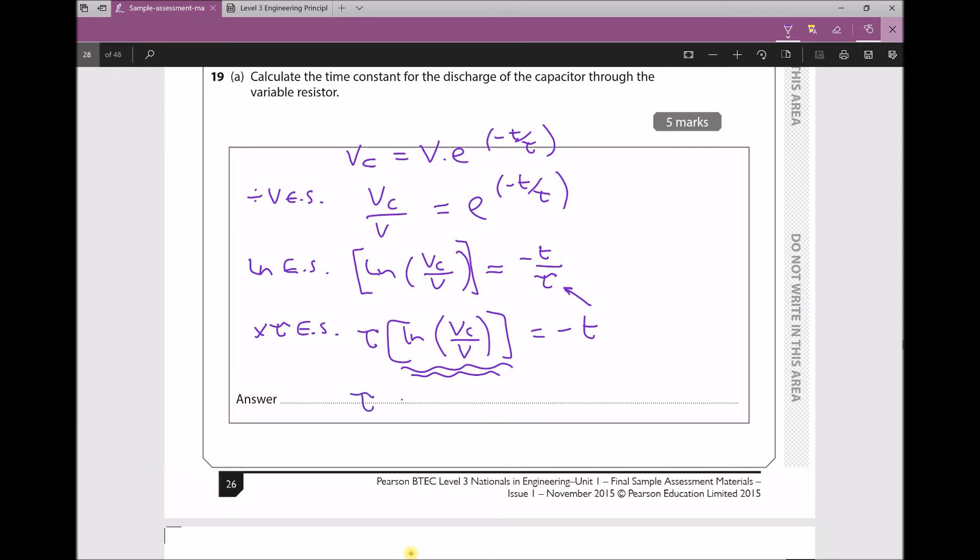What I'll get is tau equals -T divided by ln(VC/V). Now it's simply a case of plugging in some values. T was 10 seconds, so I've got -10 over the natural log of... VC was 3 and V was 12, giving me a time constant equal to 7.21. My units there are seconds because the time here was given in seconds. Therefore, my time constant is 7.21 seconds.